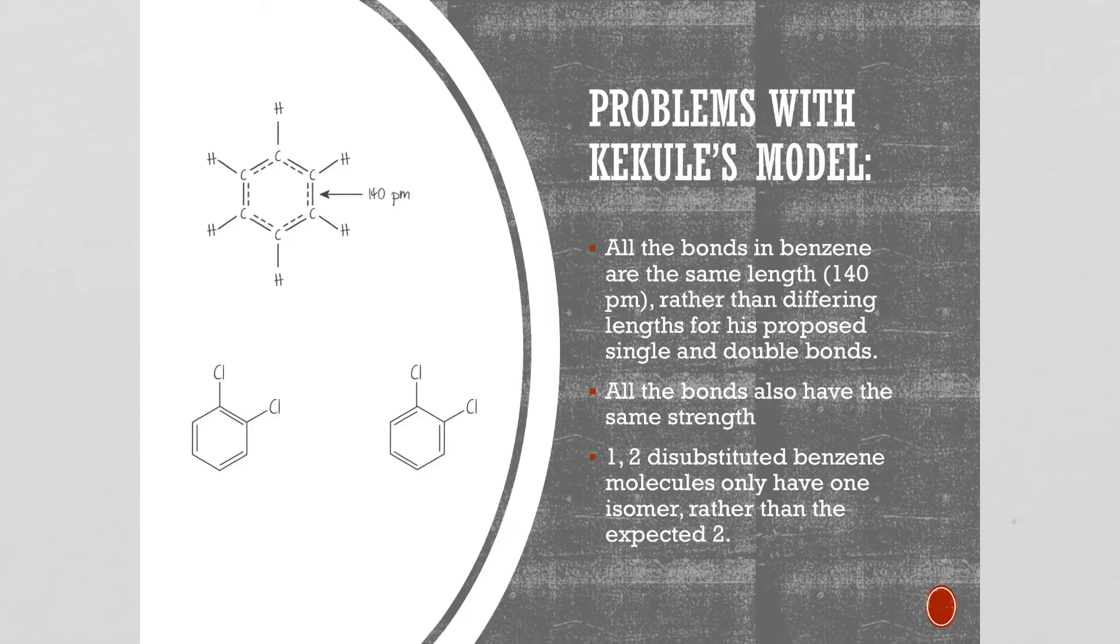If it was his model you would have this isomer or this isomer alternating as the two options but instead you just have 1,2-disubstituted benzene. So there's not that option of two different isomers.